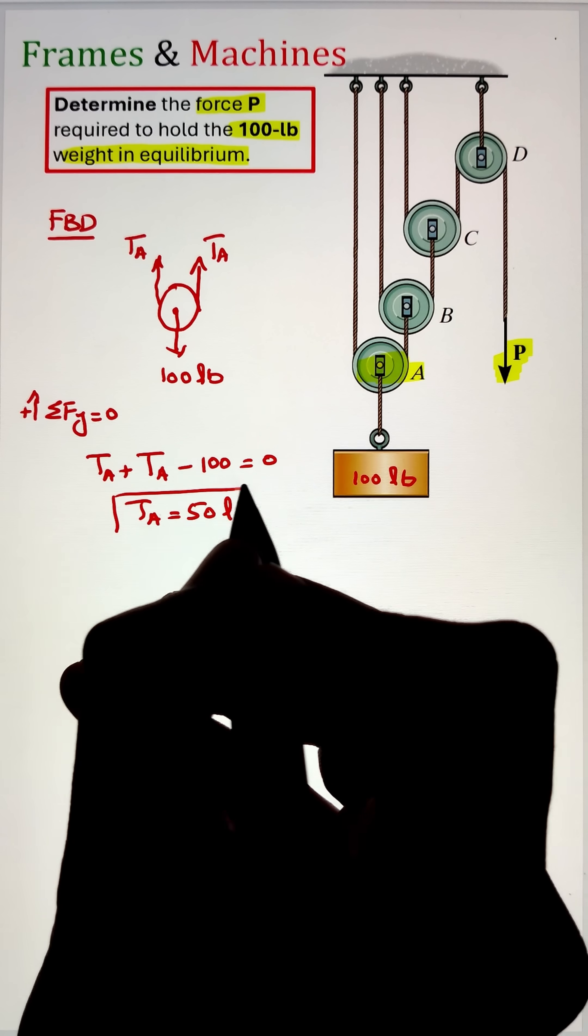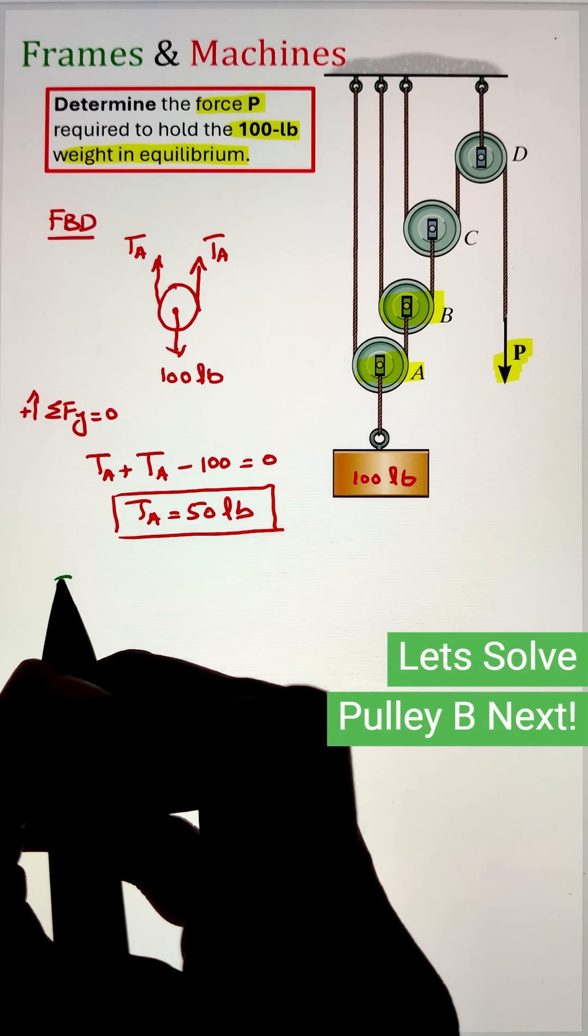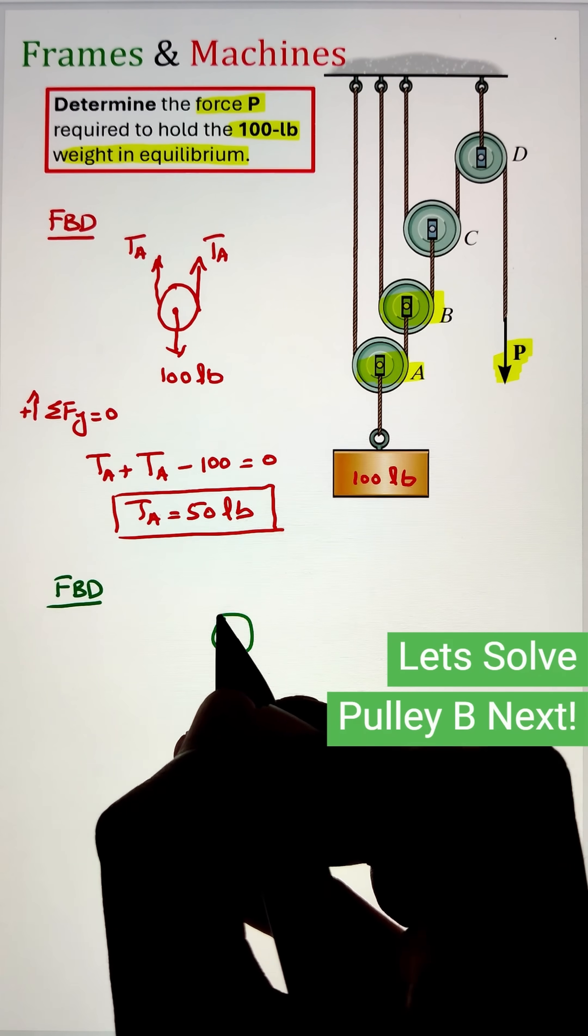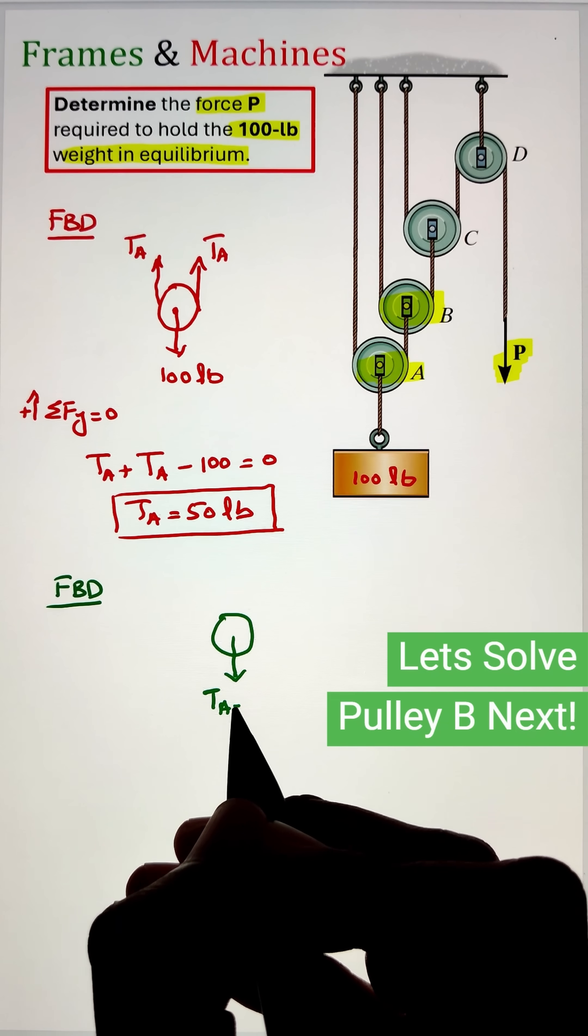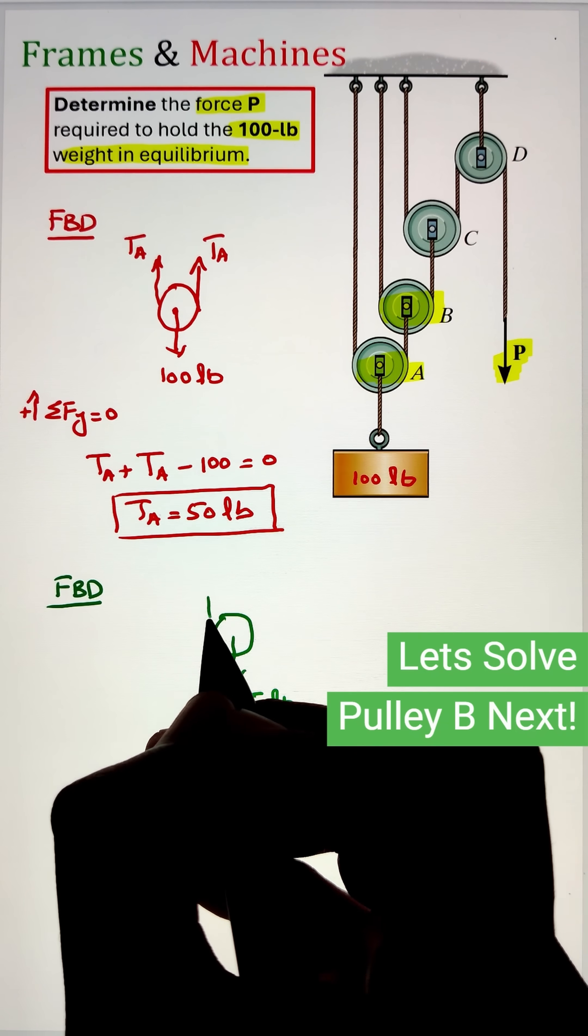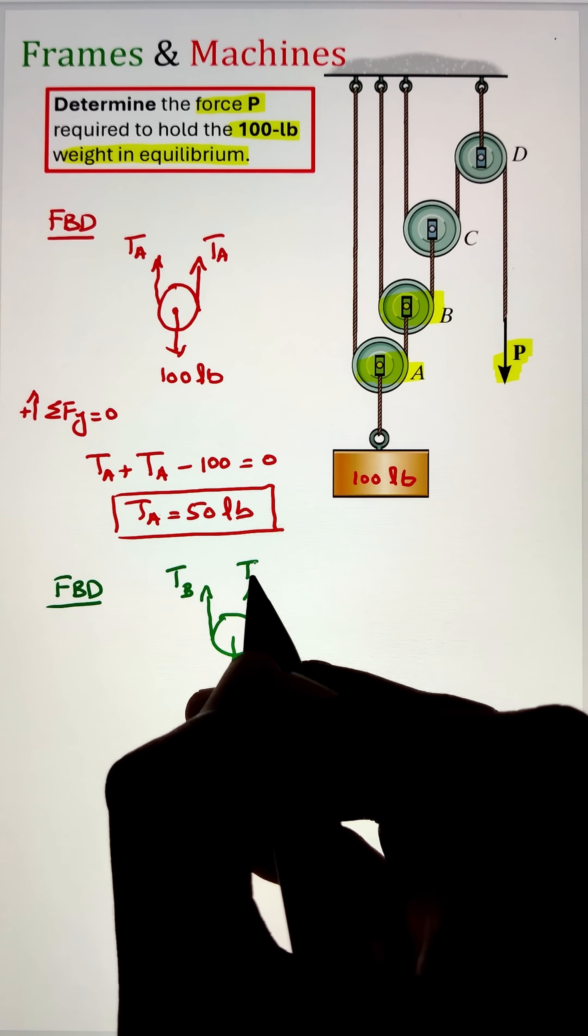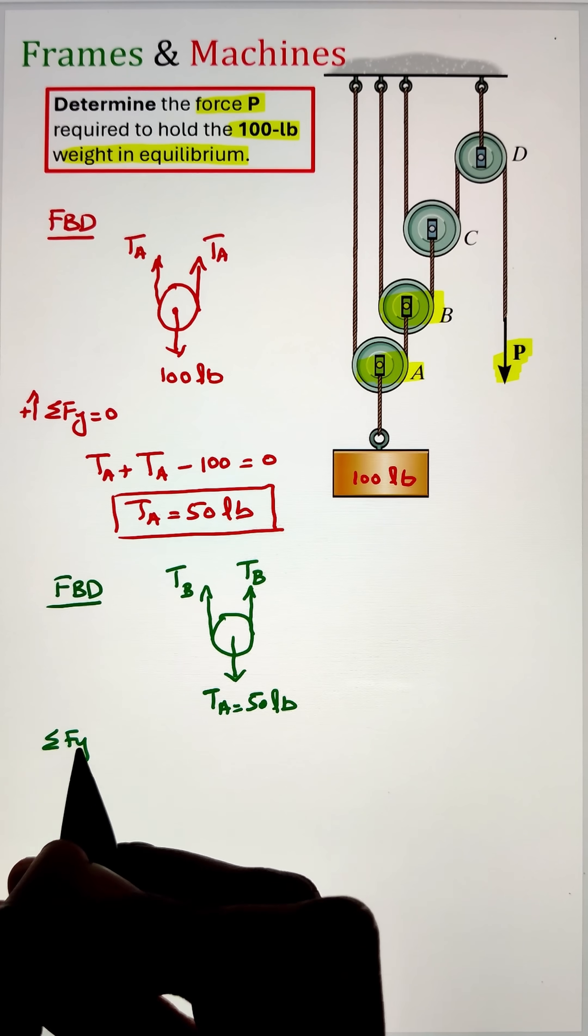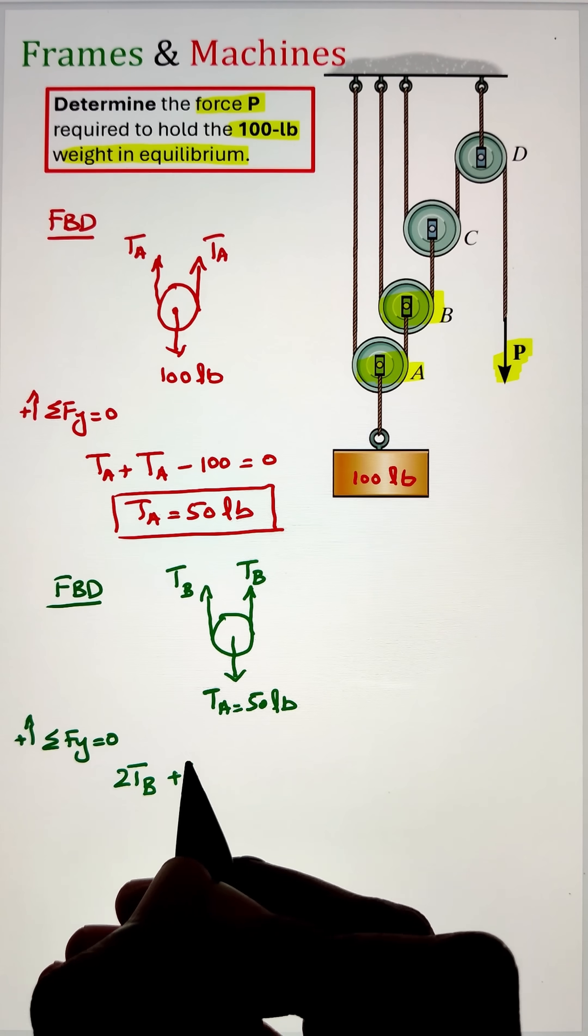Next, move to pulley B and develop the free body diagram. In this case, the rope connecting pulley A and pulley B has a tension of 50 pounds, whereas I have two ropes going in the upward direction at pulley B. This tension can be calculated by applying the equilibrium equation along the vertical axis, giving us a tension of 25 pounds.